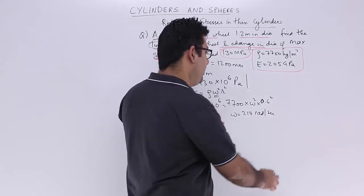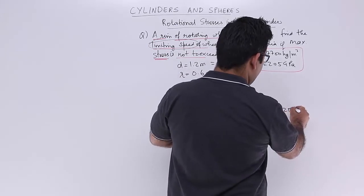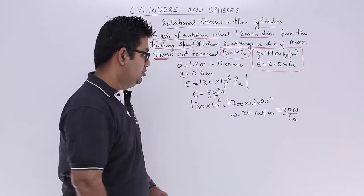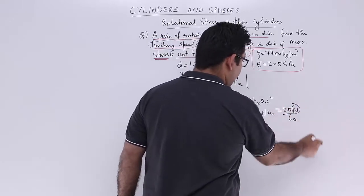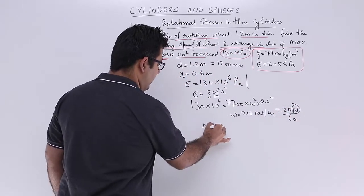We know that omega in terms of RPM is 2πN/60. So just equate it and you will get the value for N, which comes out to be approximately